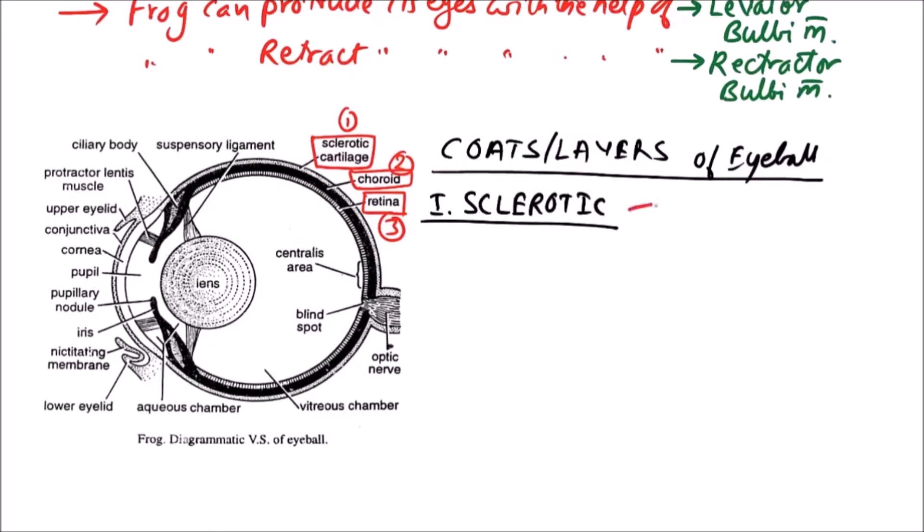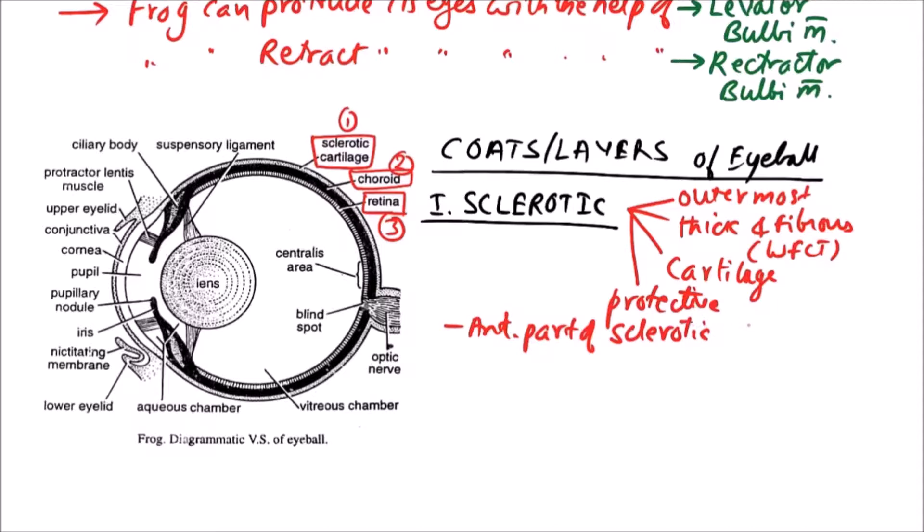First, the sclerotic. Sclerotic is the outermost layer. It is thick and fibrous, made up of white fibrous connective tissue. It is also having cartilage. It is protective in nature. The anterior part of sclerotic continues with cornea, and cornea is covered by conjunctiva.